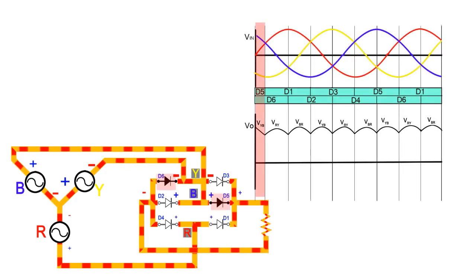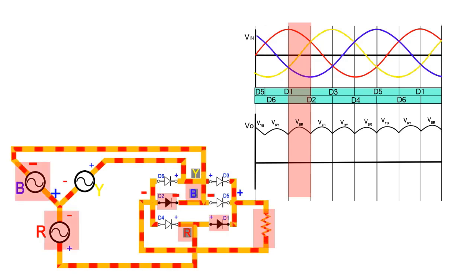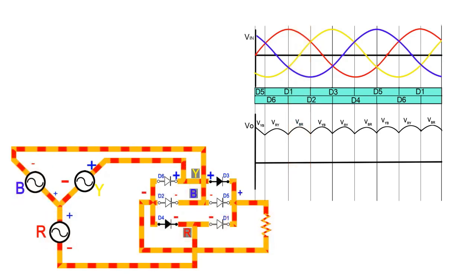From 0 to 30 degrees, D5 and D6 get on and our load gets connected to phase Y and B, which gives output voltage equal to line voltage VYB. From 30 degrees to 90 degrees, D1 and D6 get on and our load connects to phase R and Y, which makes output voltage equal to line-to-line voltage VRY. And similarly, from 90 degrees to 150 degrees, D1 and D2 get on and the load gets connected to B and R phase, and output voltage becomes VBR.